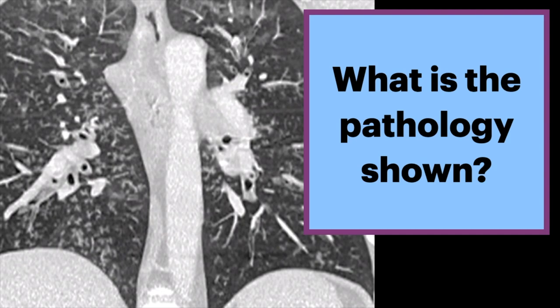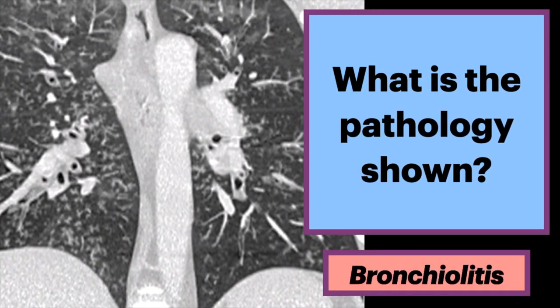What is the pathology shown here? On this coronal CT, we see multiple thickened bronchi in a tree and bud pattern. The answer is bronchiolitis.